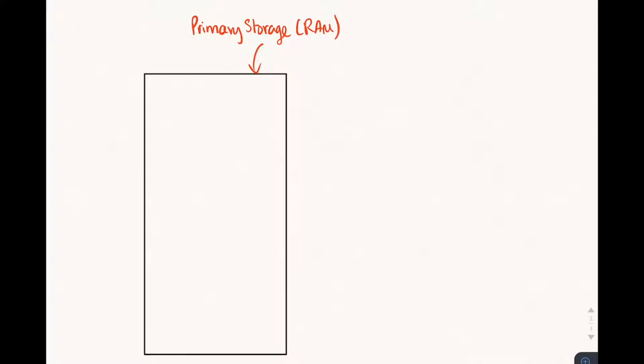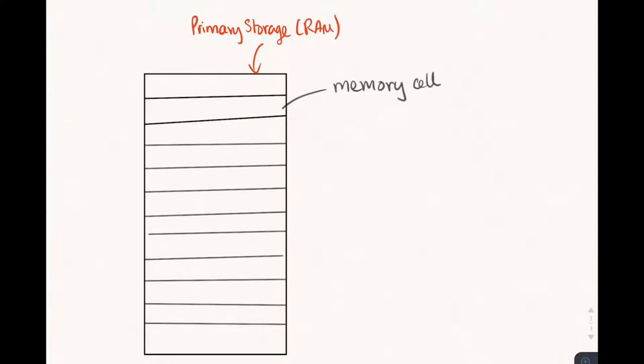So here we have a box - this represents our memory and we can break that box into individual segments called cells. Each of those cells will be of the same size which we call the cell size, and that might be maybe one byte or two bytes. So if it's one byte that means eight bits of data could be stored inside each memory cell.